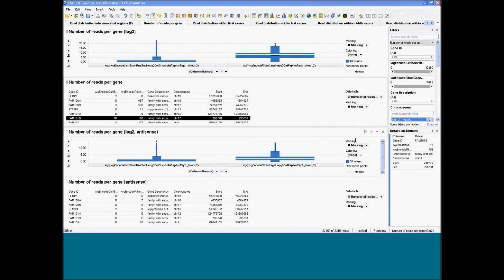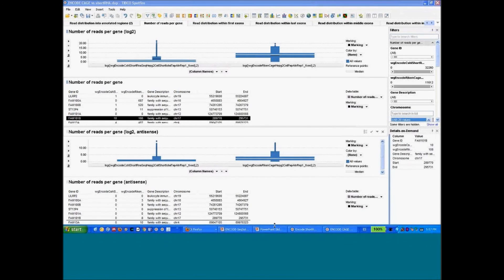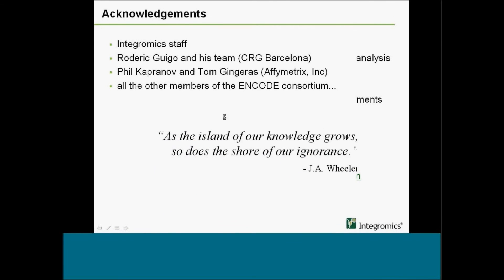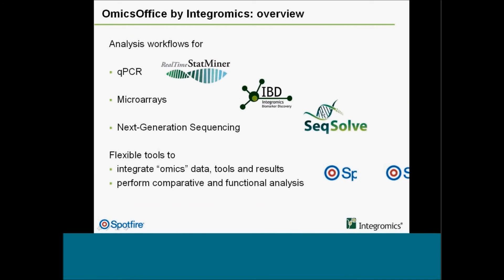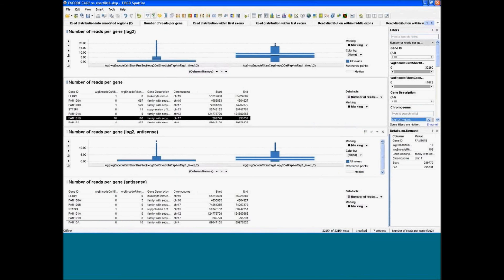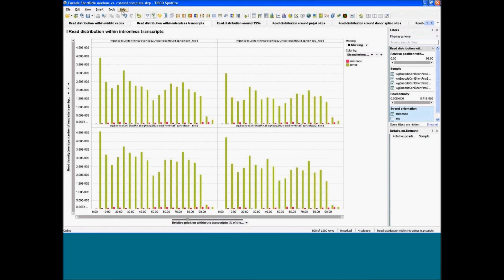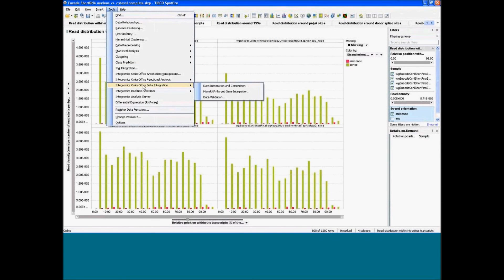Another question: could you tell us more detail on what kind of integration you can offer from the tool? We have three main applications for qPCR data analysis, microarrays, and next-generation sequencing. You can integrate results from SixSolve with your own results from qPCR that was analyzed with StatMiner. This is all based in our tools called the OmixOffice Data Integration Tool.